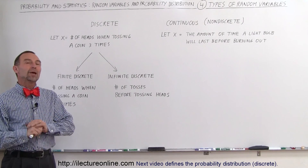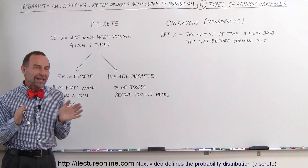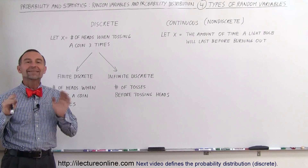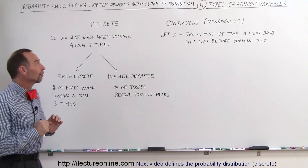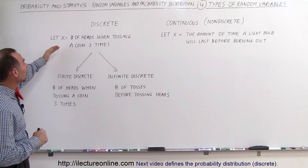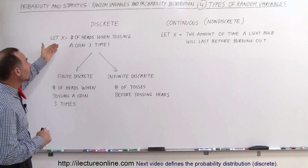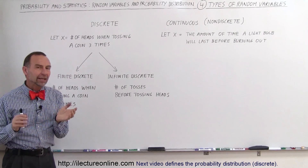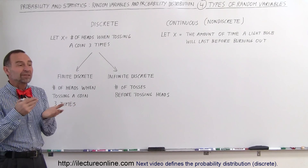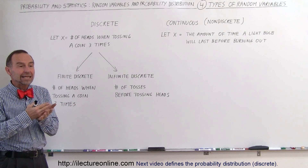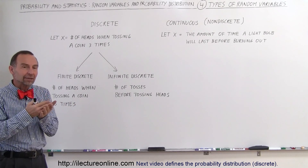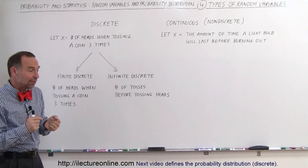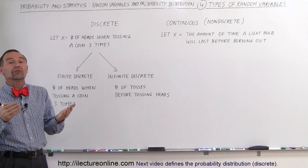Welcome to Electron Online. When it comes to random variables, there are two main types. The first type is what we call the discrete variable. Discrete variable means that typically the value that the random variable can have is an integer value.